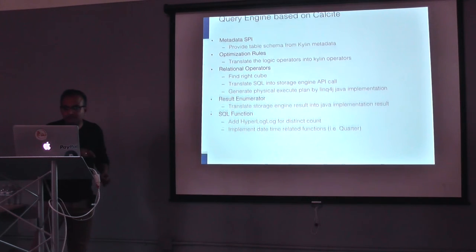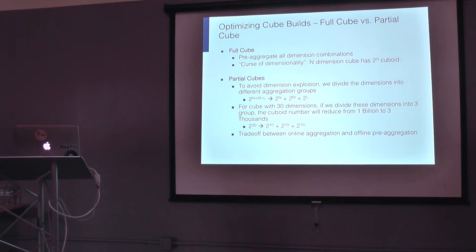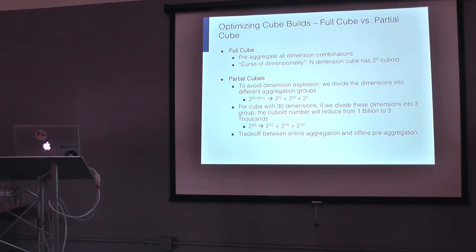All of this is good, but the system is only useful if you have the ability to build the cubes in a reasonable amount of time. Because of the combinatorial explosion, if you have a large number of dimensions with large cardinality, you could take forever to build those cubes and your OLAP solution becomes useless. One of the key optimizations is the notion of aggregate groups.